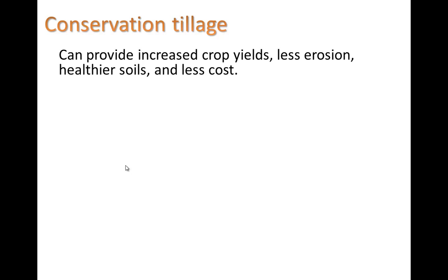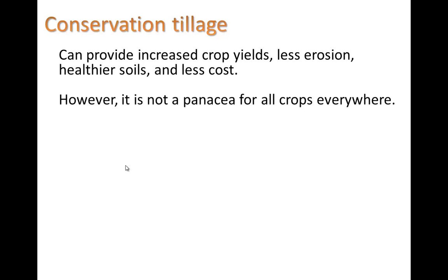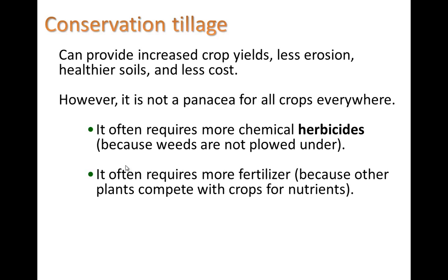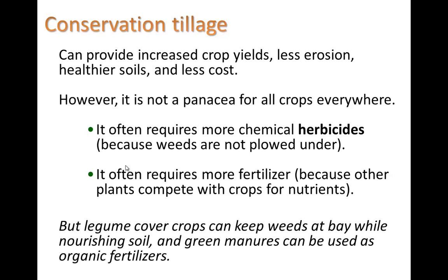Some details about conservation tillage: it can provide increased crop yields, less erosion, and healthier soils at lower costs because you don't have to go through the tilling process, which takes fossil fuels to run the tractor. However, it's not a panacea for all crops everywhere, because it often requires more chemical herbicides since weeds are not plowed under — and it often requires more fertilizer because other plants compete with crops for nutrients. Legume cover crops can keep weeds at bay while nourishing soil, and green manures can be used as organic fertilizers, so there are organic methods to control for these issues.